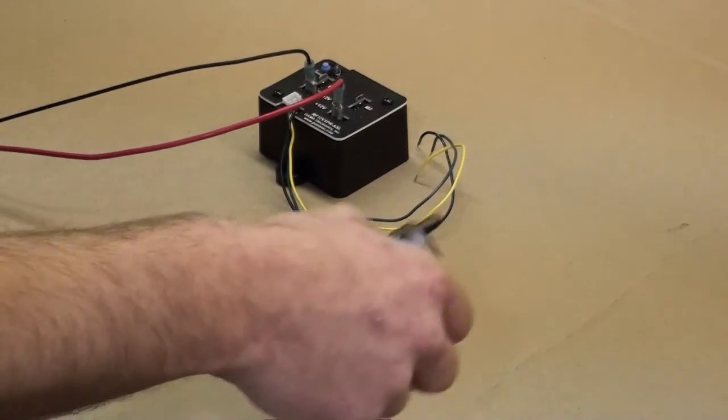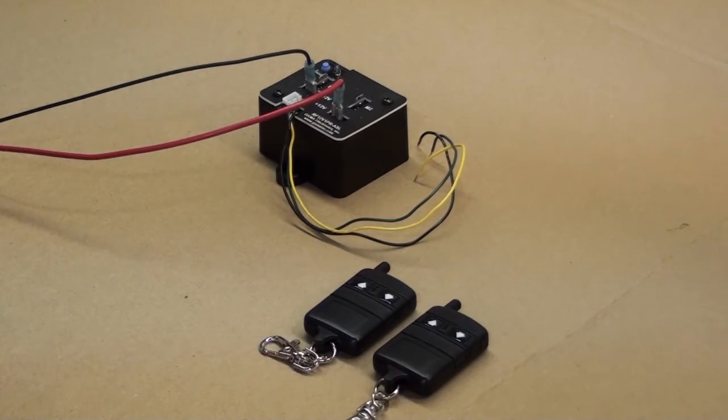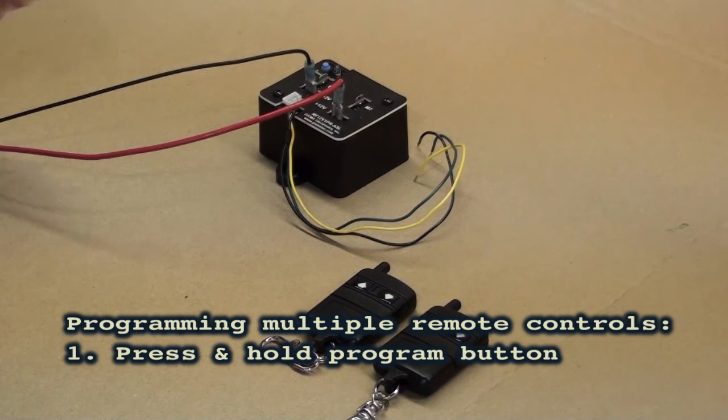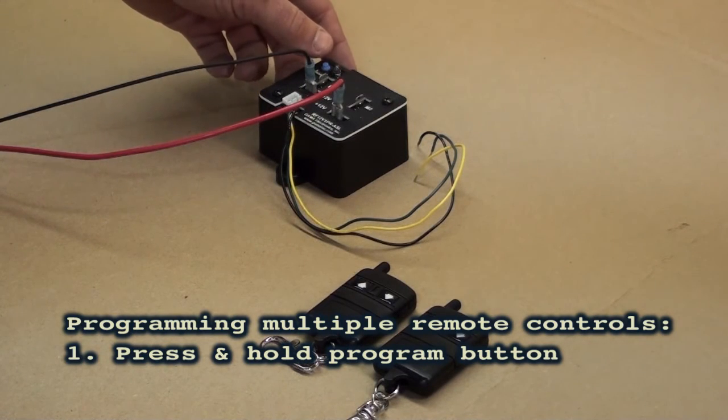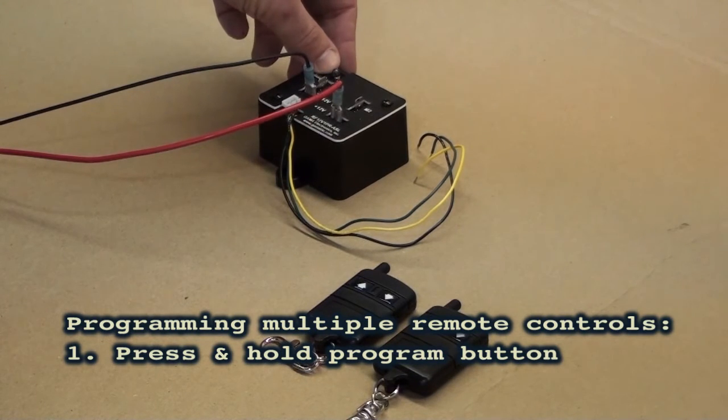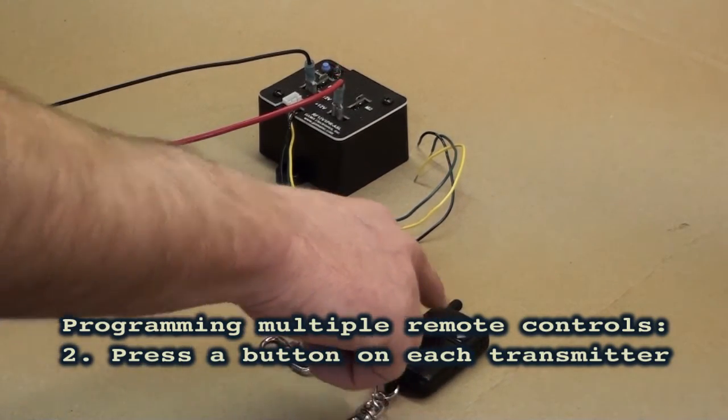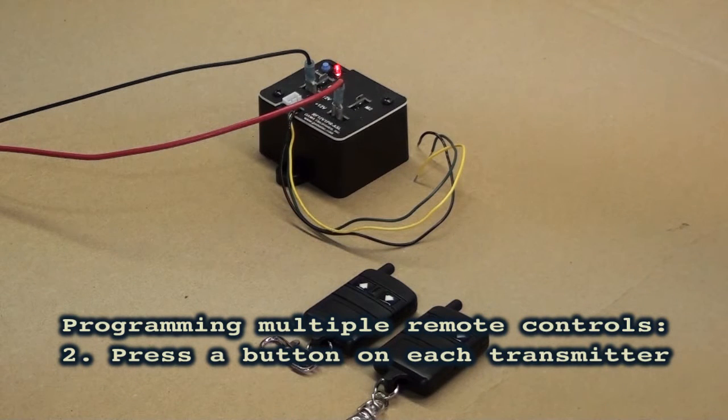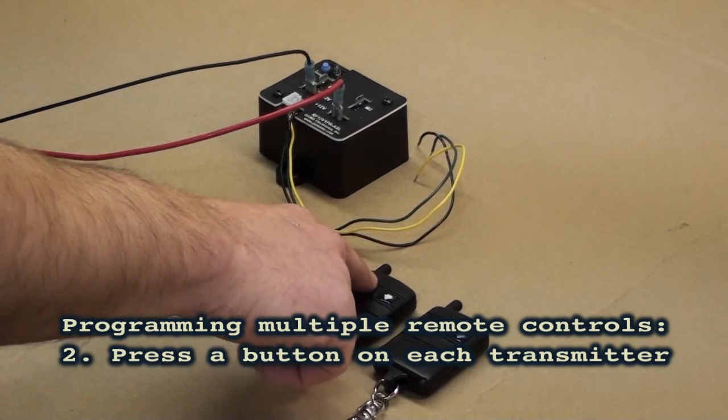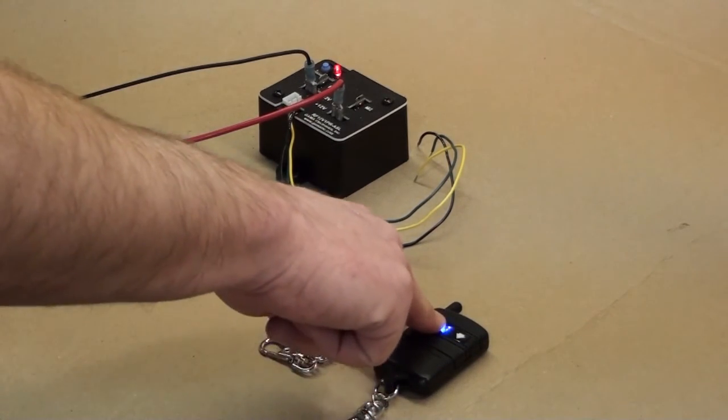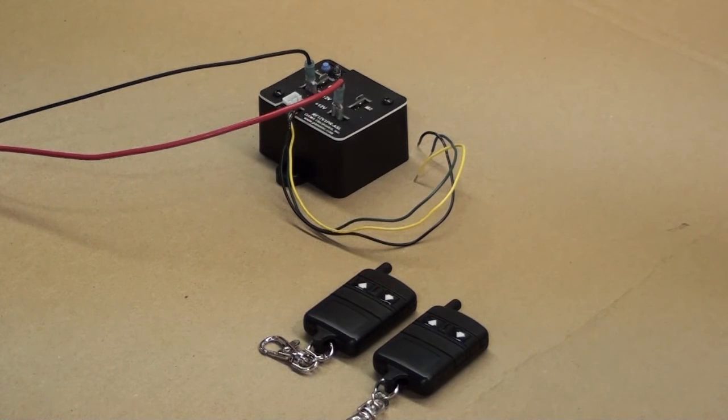Our systems can be set up to operate on multiple remote controls. To program multiple remote controls to the same receiver, press and hold the blue program button until the red LED illuminates. Press a button on your first transmitter, then a button on your second transmitter. The LED will blink once for each unit and then extinguish. Now both transmitters are programmed to work with the receiver. This can also be set up in latching mode as we did in one of the previous steps.